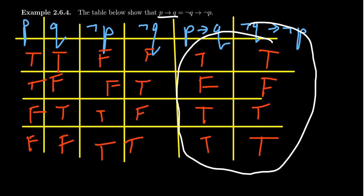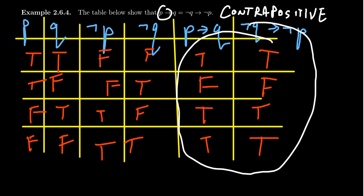The first one is the conditional statement P implies Q. This one — not Q implies not P — is the contrapositive, which we introduced previously. This actually gives motivation for why we care about the contrapositive. The contrapositive is logically equivalent to the original conditional statement, which means if one is true, so is the other; if one is false, so is the other. Sometimes when working with a proof, you want to prove a conditional statement, and sometimes working with the contrapositive is easier to prove. Therefore, if the contrapositive is proven to be true, the original conditional is true as well, because they are logically equivalent.